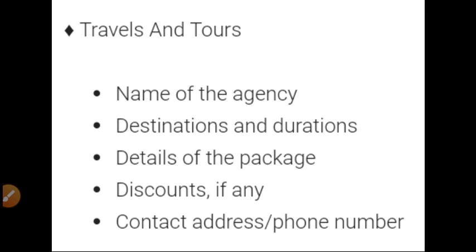The next category is 'Travels and Tours.' These companies organize tour packages abroad or inside the country. In this ad, you specify the name of the agency — like Mahindra, Thomas Cook, Cox and Kings, or others — then the destinations and duration (for example, Mauritius or America, with duration like four nights three days or seven nights six days), details of the package (what the travel agency will provide, like breakfast, dinner, sightseeing), and if any discount is available, mention that. At last, contact address and phone number.